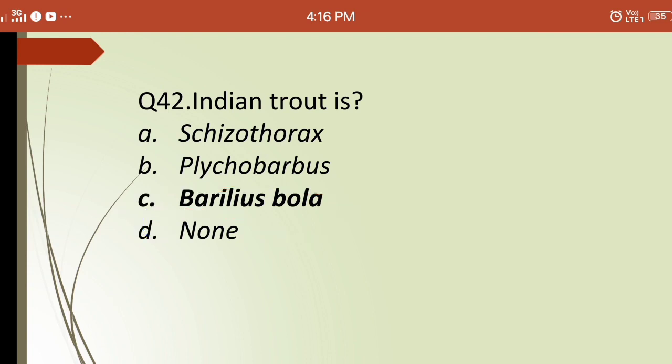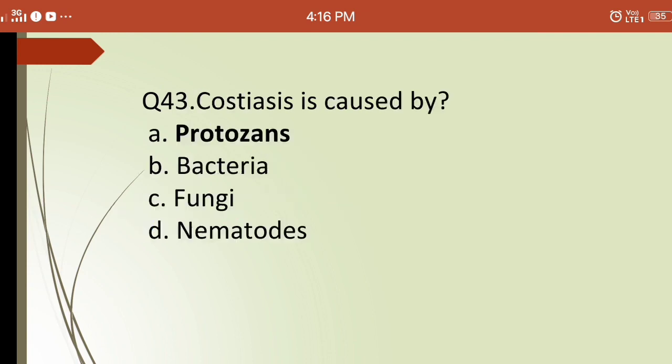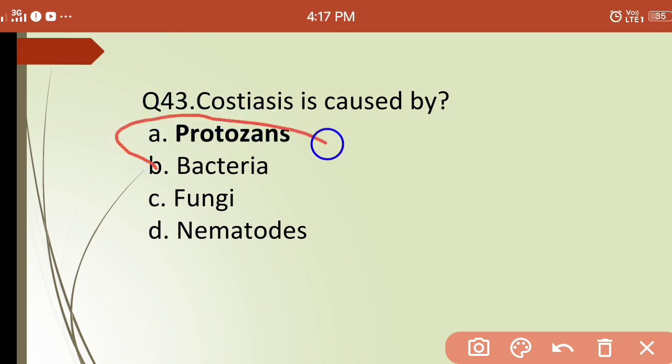Forty-third question: costiasis is caused by which organism? Options are: (a) protozoans, (b) bacteria, (c) fungi, (d) nematodes. The correct answer is (a) protozoans — protozoans are the main causative factor for costiasis disease in fish.